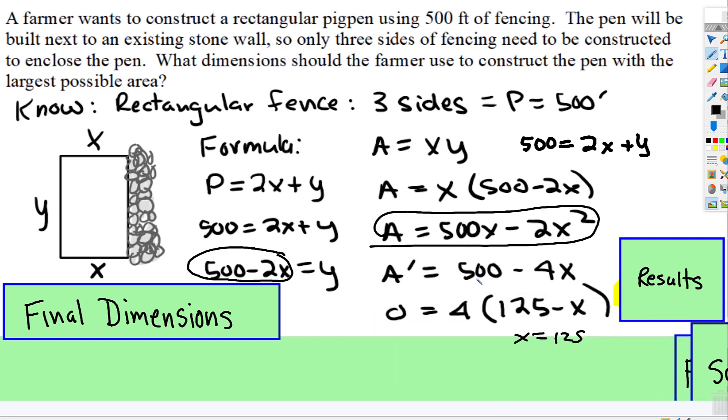All right, so 4, when you factor out a 4, that leaves 125 here and an x here. That means x is 125. Well, if this is 125 and this is 125, that's 250 feet. Well, 500 subtract 250, that means the y side is 250 feet.